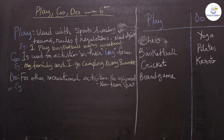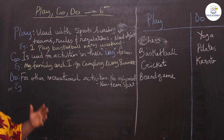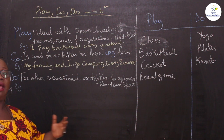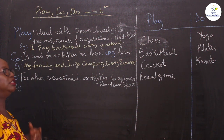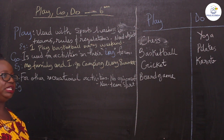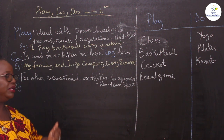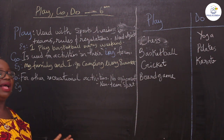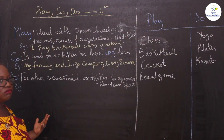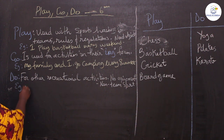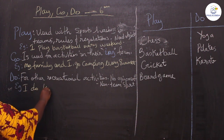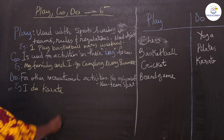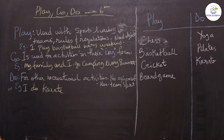Then there is 'do', which is quite different. Every other activity that does not fall into teams and equipment, and does not fall into the -ing form — that's the 'do' type. You don't really need a particular equipment, there are no teams, you can do it solo, alone. For example: I do karate. I practice karate. Those would be examples of when you use 'do'.